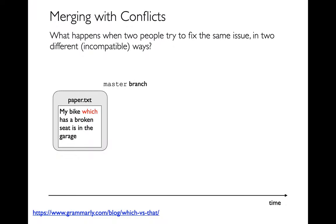In this video, we're going to actually start running some real git commands again, and we're going to produce the worst possible scenario where we have a merge conflict between two different versions. The scenario you should be imagining is that two different people are working on a paper, editing it at the same time, and they make contradictory changes and want to merge it all together.